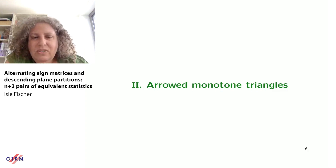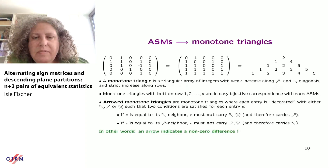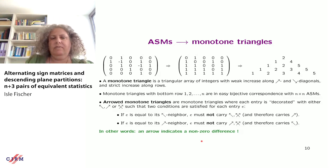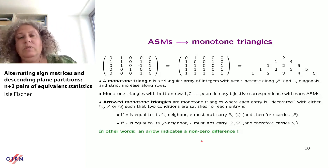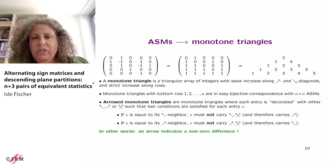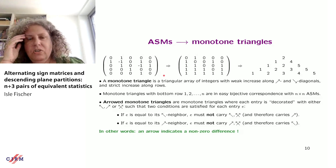Now let me introduce the new objects extending alternating sign matrices: arrowed monotone triangles. First recall monotone triangles. You take an alternating sign matrix, add to each entry everything in the same column above it, get a 0-1 matrix with i ones in row i, then record the positions of the ones row by row. The result is a triangular array with weak increase in the northeast and southeast directions and strict increase along rows.